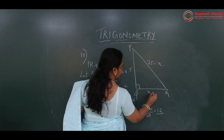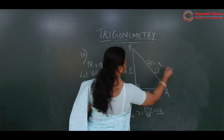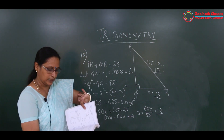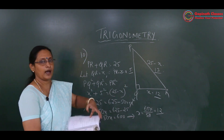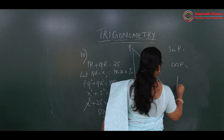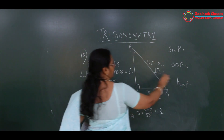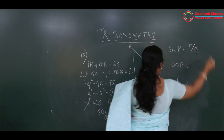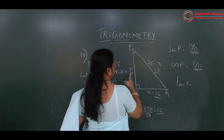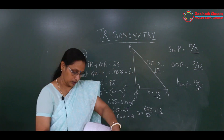So QR equals 12 and PR equals 25 minus 12 equals 13. Now we have all three sides: PQ = 5, QR = 12, PR = 13. Sin P is opposite upon hypotenuse: 12 upon 13. Cos P is 5 upon 13. Tan P is opposite upon adjacent: 12 upon 5.